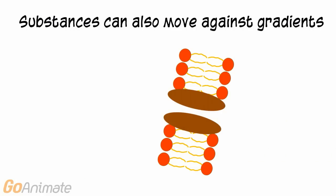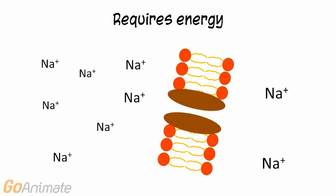Substances can also move against gradients. Here we have more sodium outside of the cell than in. If sodium moved by facilitated diffusion, it would move into the cell. However, energy can be used to move sodium against its gradient, or outside of the cell.